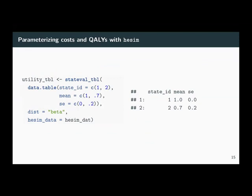To parameterize costs and utilities with HESIM, there are many ways to do it. The simplest way is to use a special object called a state val table. Here we apply means and standard errors for the two non-death health states in our model — states one and two, the healthy and sick states. Since we're focusing on utility, we'll use a beta distribution for our PSA. If you want, you can make this more flexible — these could vary by patients, treatment strategies, and/or time.